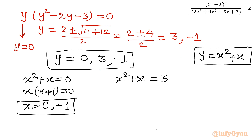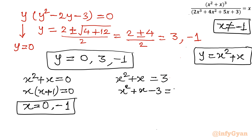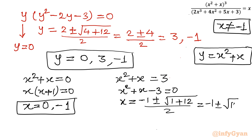For the second quadratic equation: x² + x - 3 = 0. Applying the Sridharacharya formula: x = [-1 ± √(1 + 12)] / 2 = (-1 ± √13) / 2. This gives two real values. Conclusion: from the first two equations, x = -1 is rejected as it makes the denominator zero. The valid solutions so far are x = 0 and x = (-1 ± √13) / 2.